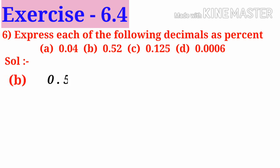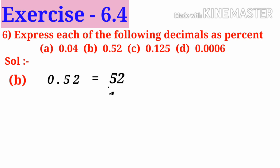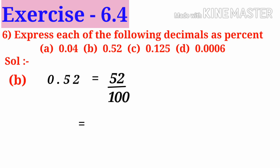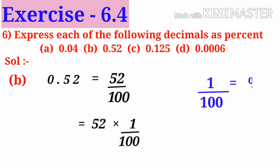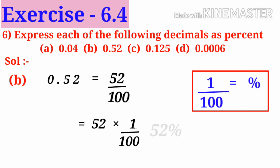B: 0.52. Observe that there are two non-zero numbers, so write 52 as the numerator. Observe that there are two decimal places, so add two zeros after 1 in the denominator, that is 52 by 100. Now 52 by 100 can be written as 52 into 1 by 100, which is 52 percent, because 1 by 100 is percent.